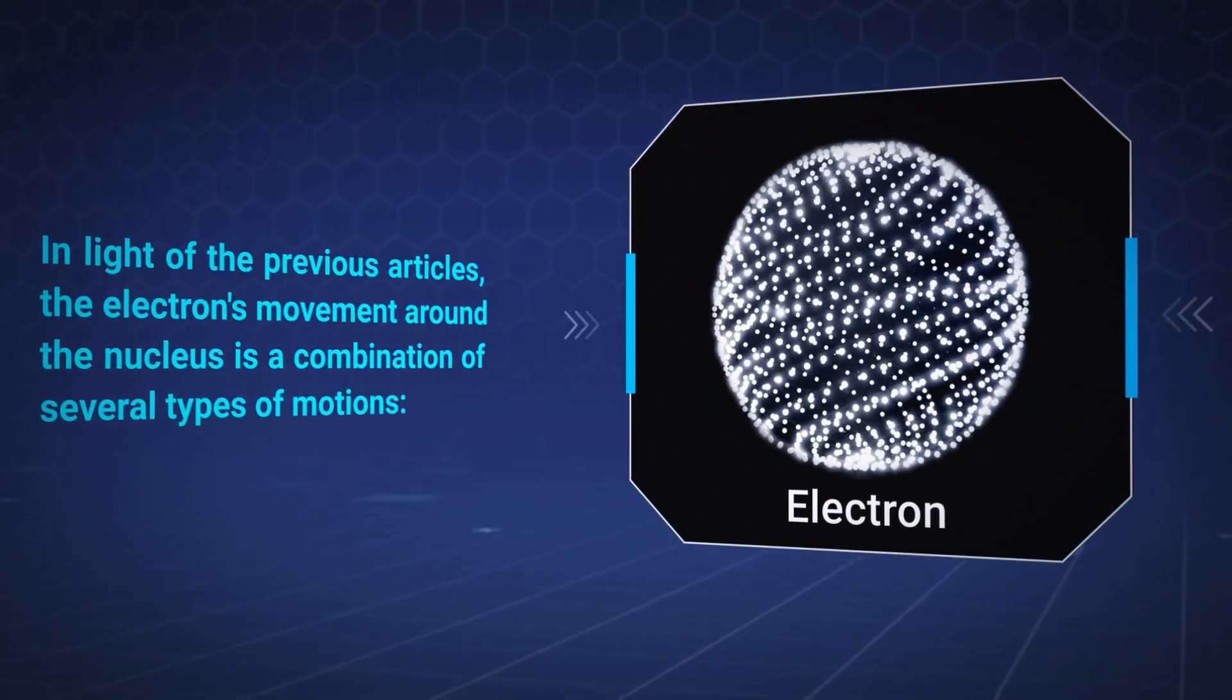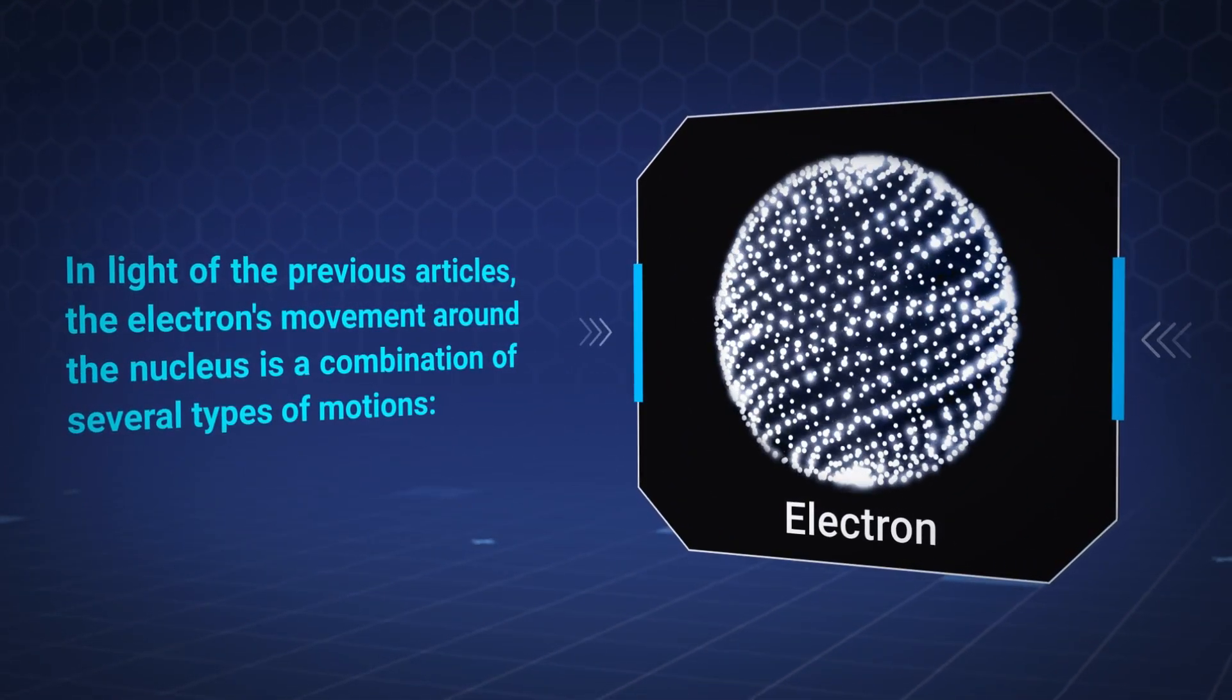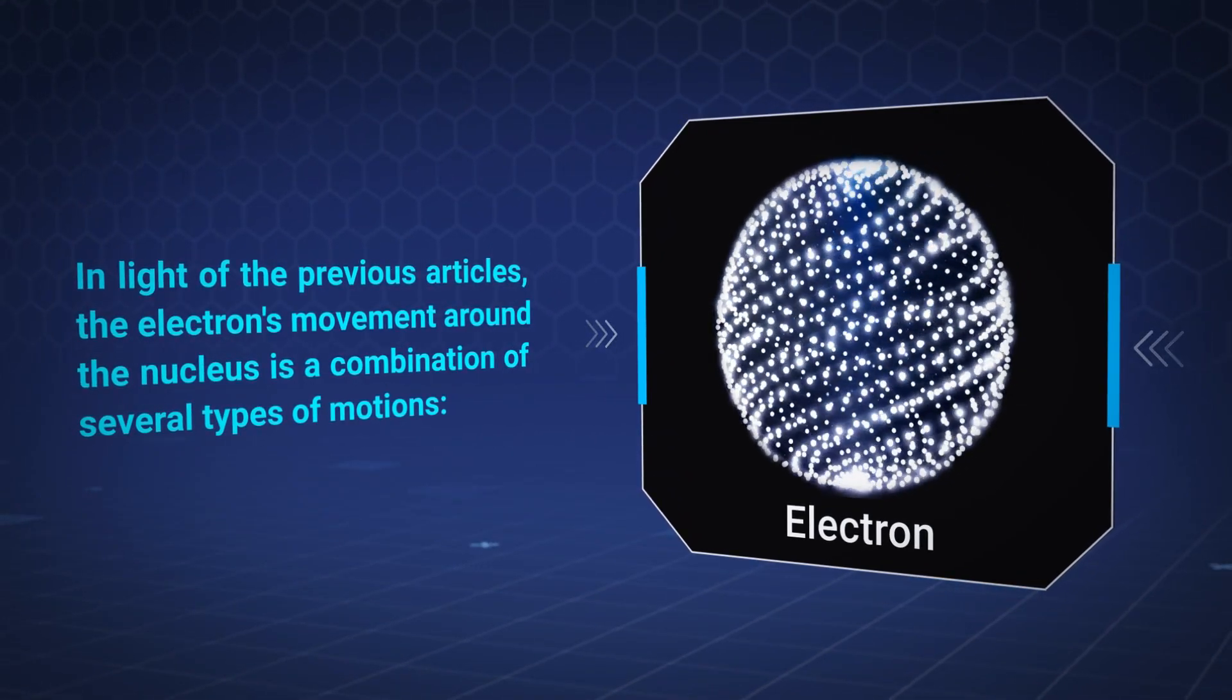In light of the previous articles, the electron's movement around the nucleus is a combination of several types of motions.